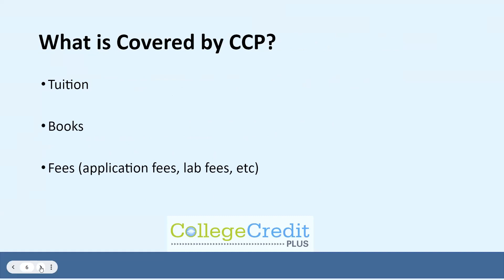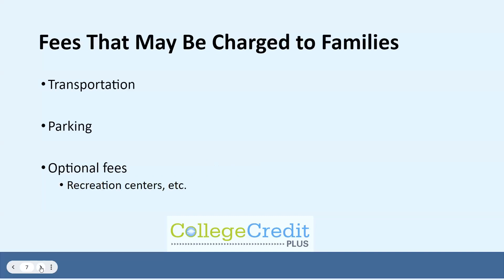CCP covers most of the costs of participation for families. The school district will pay for the tuition and books for students. Colleges will waive all fees, such as application fees, lab fees, etc. So as long as a student is eligible and a course is eligible, the tuition and fees should be covered and the course should be free to families and free to the students.